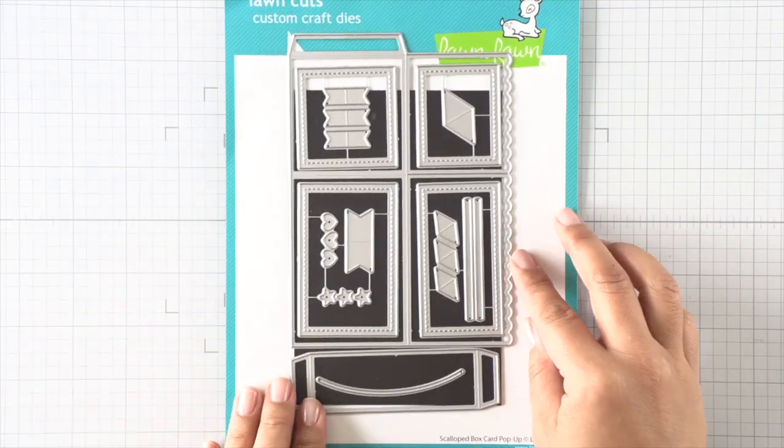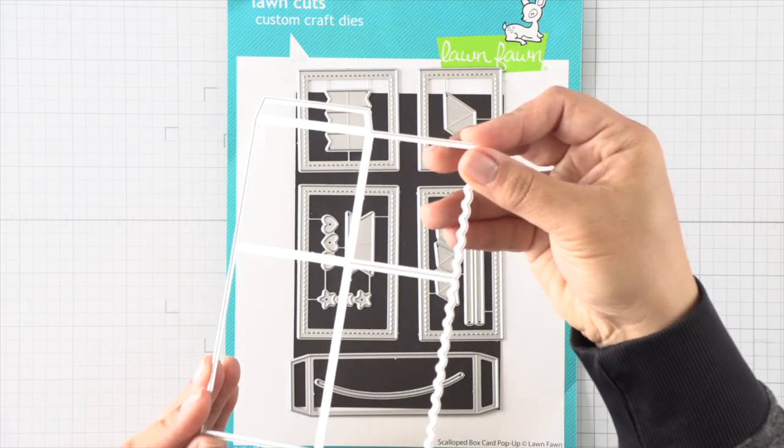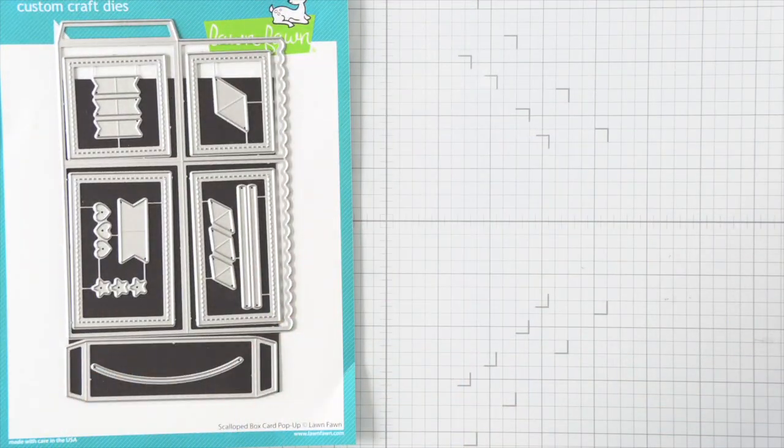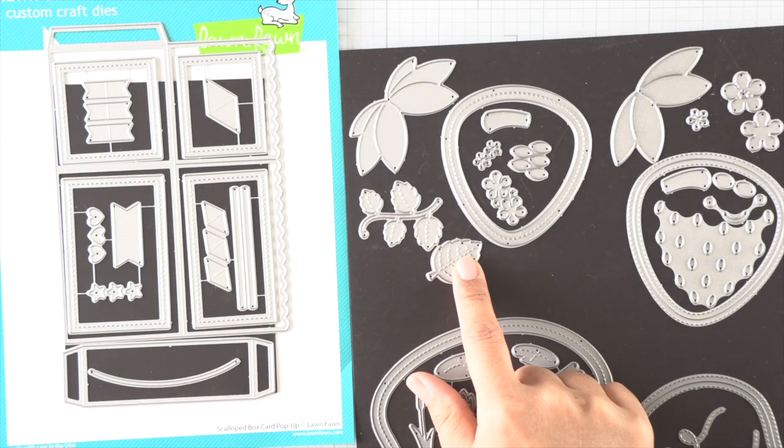To construct our little market basket, I'm using the scalloped box card pop-up die. I'm gonna modify this box card just a little bit so we can turn it into a little market basket, and then we'll be using some strawberry products as well.